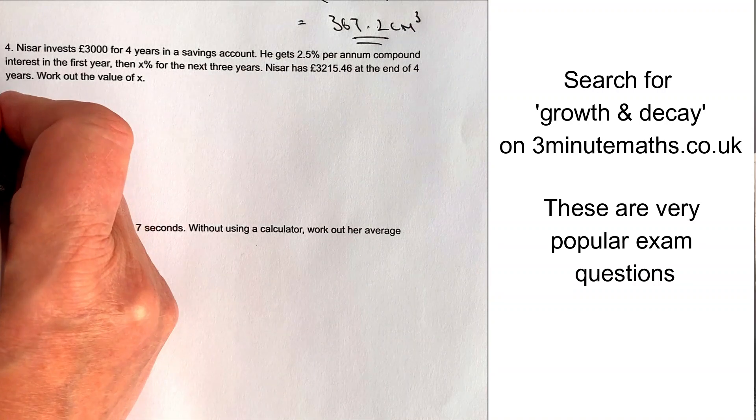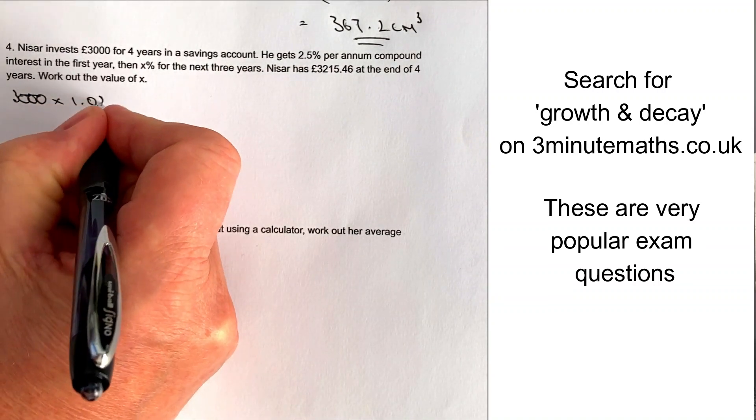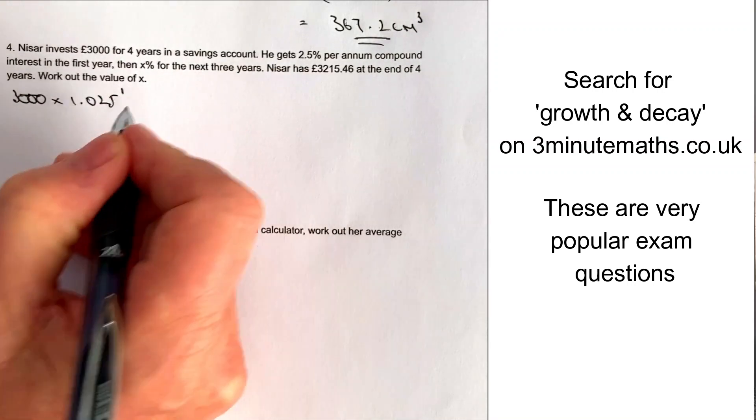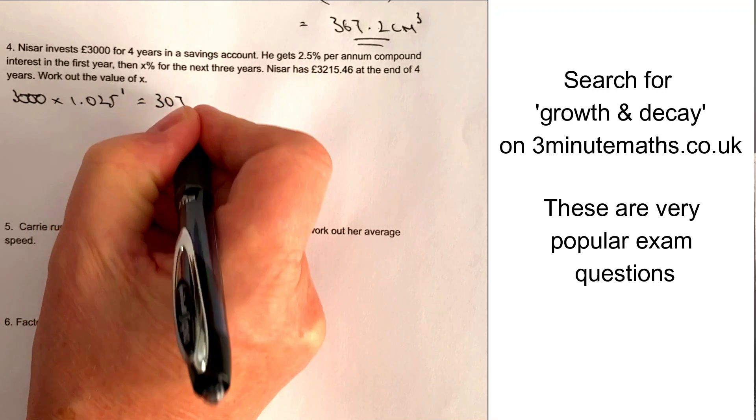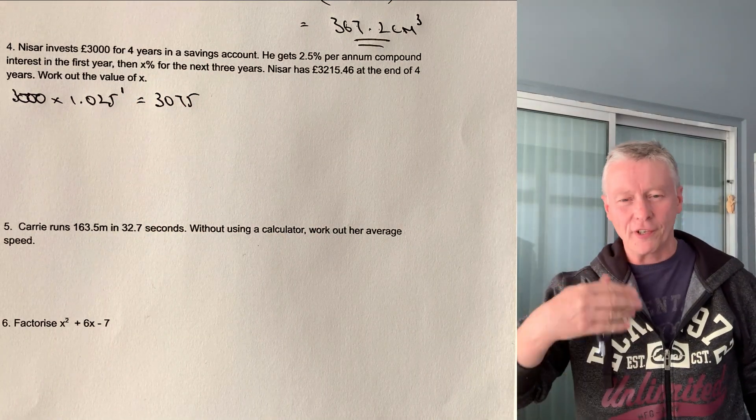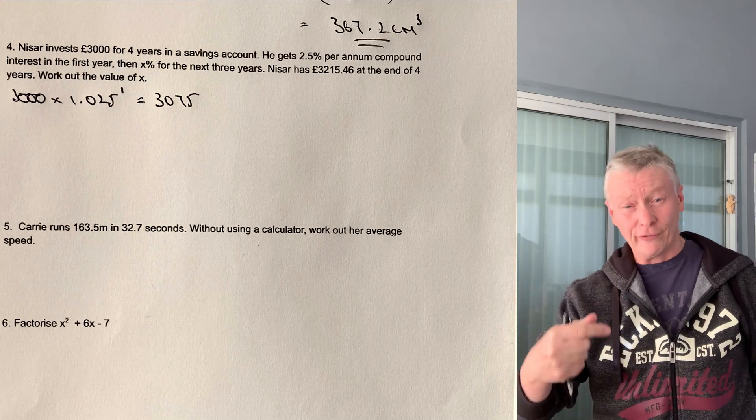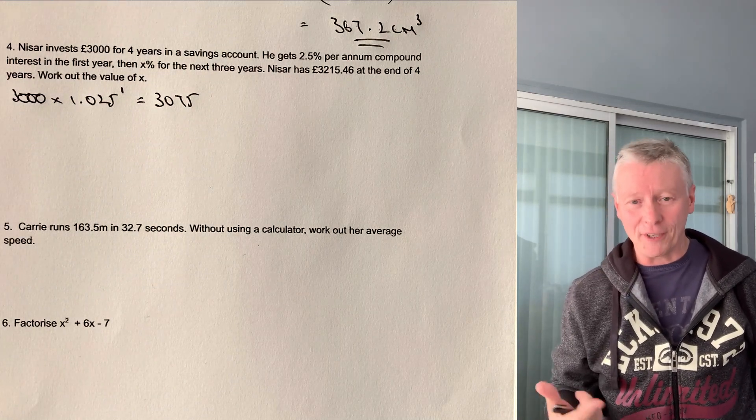So let's move on then to question number four. Now, question number four, we've got NISAR investing £3,000 for four years in a savings account. So what we basically mean is for the first year, he gets two and a half percent compound interest in the first year. So at the end of the first year, we've got £3,000 multiplied by 1.025. And if you like, it's the power of one. And that's going to give him £3,075. So if he puts his money in on January the 1st at £3,000, by January the 1st of the next year, he's going to get £3,075 back.